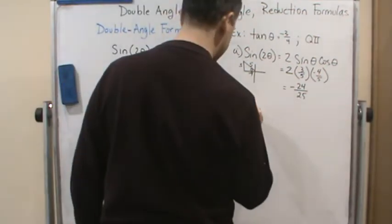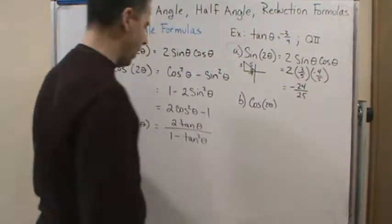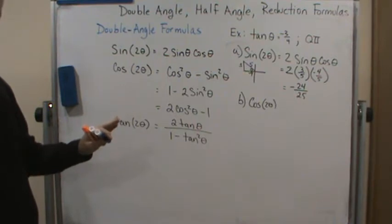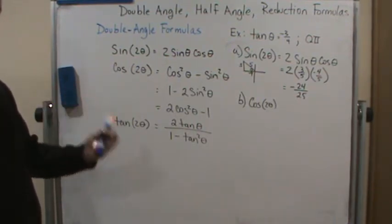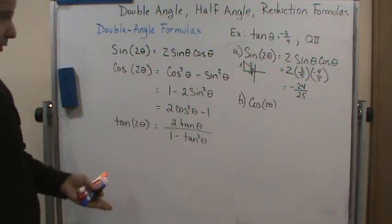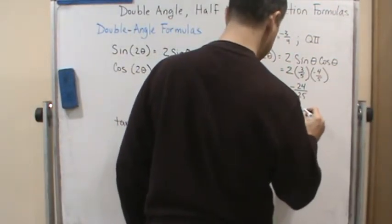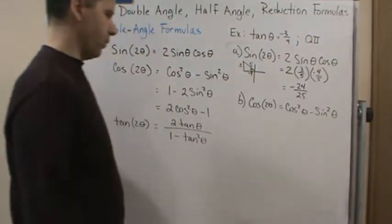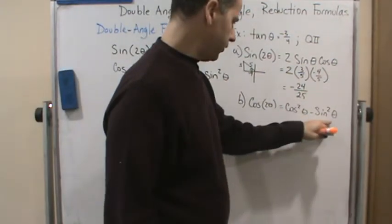Now, the next one asks us to find cosine of two theta. Now, there are three formulas you could use. It doesn't matter which one you could use. Sometimes one may be easier to solve than the other, but in this case, it really doesn't matter. So I'm just going to use the first one, which is cosine squared theta minus sine squared theta. Now, realize that these functions are being squared.